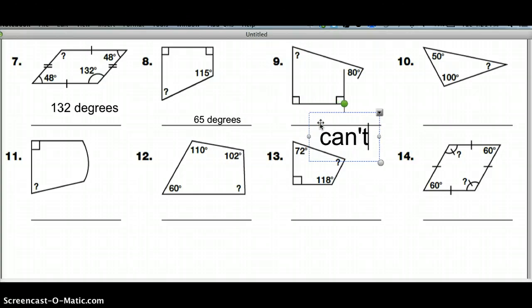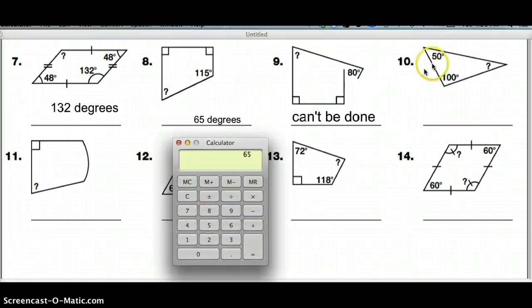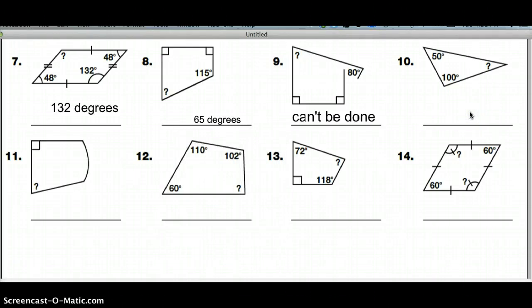On number nine, can't be done because it is not a polygon. Why is it not a polygon? Because it's not closed. Number ten, I know a triangle is 180. 100 plus 50 is 150. So I take 180 minus 150 would give you 30 degrees.